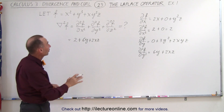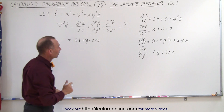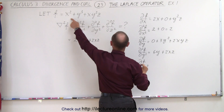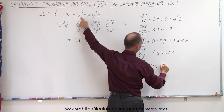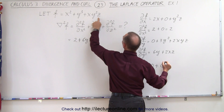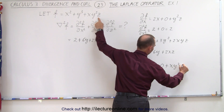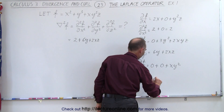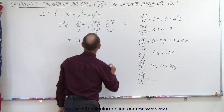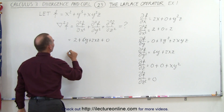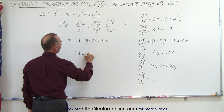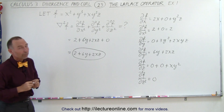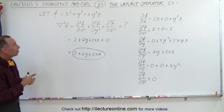Now we take the partial derivative of the function with respect to z: the first term goes to 0, the second term goes to 0, and the third term becomes xy squared. Taking the second partial derivative with respect to z, we get 0, so the third term is plus 0. Therefore, the final result is equal to 2 plus 6y plus 2xz. And that's how we operate using the Laplace operator on a scalar function.